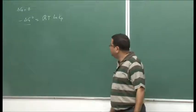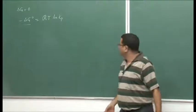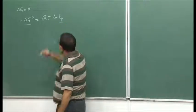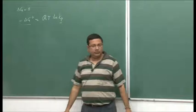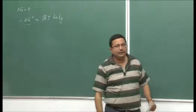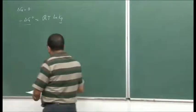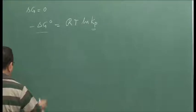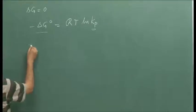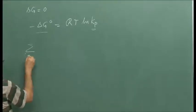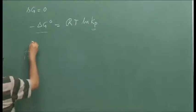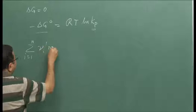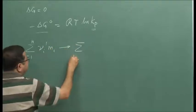Now let us continue from there. We have been discussing Kp in the last class. Now let us look at various forms of this equilibrium constant. Let us consider the generic chemical reaction that we have been discussing so far.